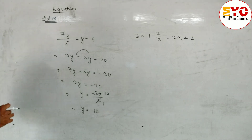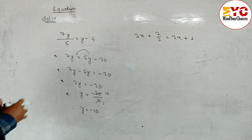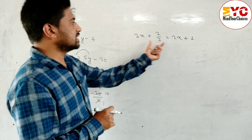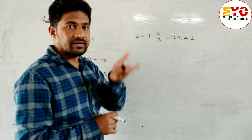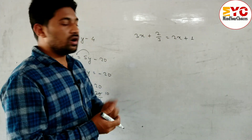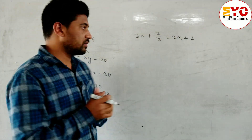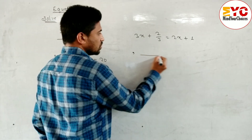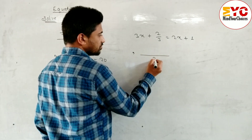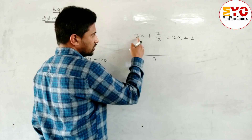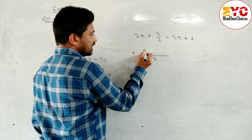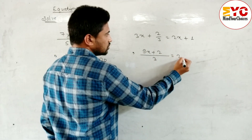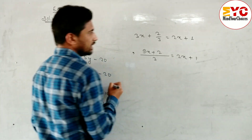Hope you understand this question. Now look at next one. You can see here these two are unlike terms, and these two are also unlike terms. We can take LCM here — LCM is 3. So 3 into 3: 9x plus 2 is equal to 2x plus 1.